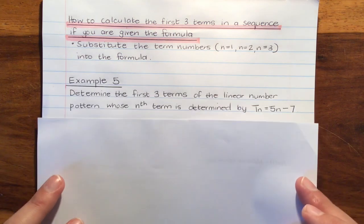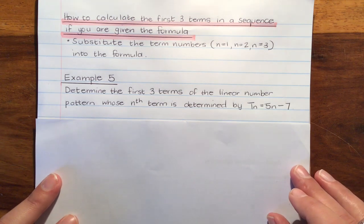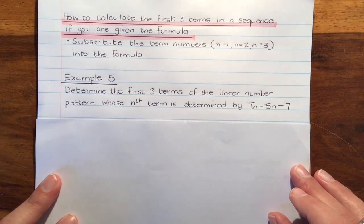For example, you could get this question. Determine the first three terms of a linear number pattern whose nth term is determined by Tn equals 5n minus 7. That means our general formula is 5n minus 7.